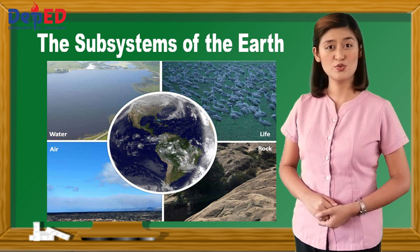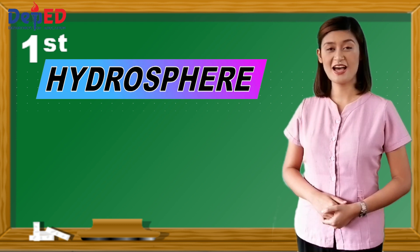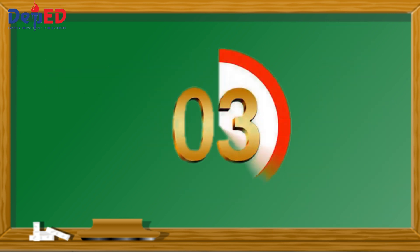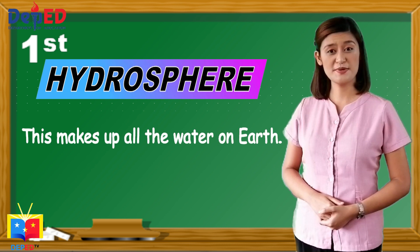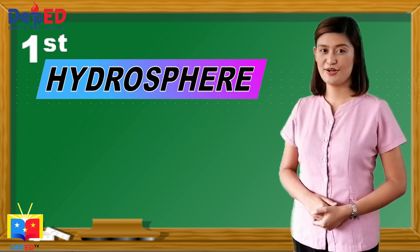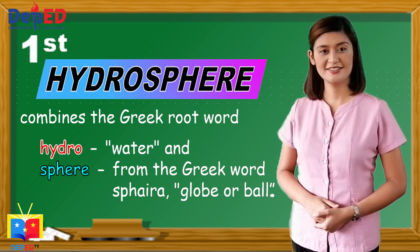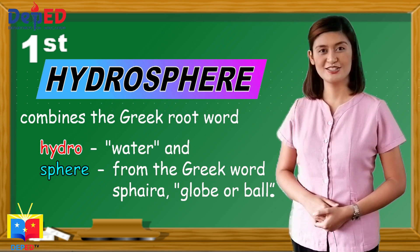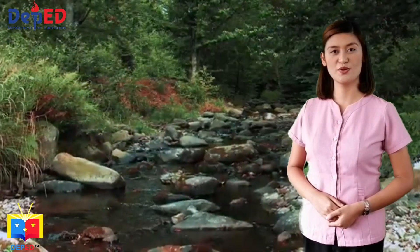There are four subsystems that we shall discuss. The first one is the hydrosphere. The hydrosphere makes up all the water on Earth. It combines the Greek word 'hydro,' which means water, and 'sphere,' from the Greek word 'sphira,' which means globe or ball. Water is what makes Earth unique — Earth is unique in the solar system for its abundant surface waters. It is because of the hydrosphere that life flourishes on Earth.